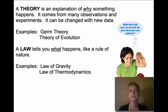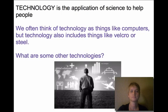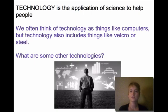A law tells you what happens — it's like a rule of nature. We have the law of gravity and the law of thermodynamics, and those don't necessarily change. We're pretty confident that the law of gravity is going to hold true. Technology is the application of science in ways that will help us. A lot of times we think about computers, but it also includes things like Velcro or steel, and there are many other technologies that help us in our everyday lives.